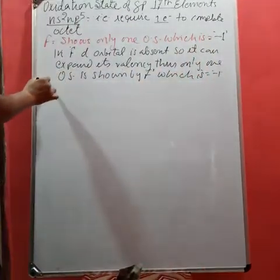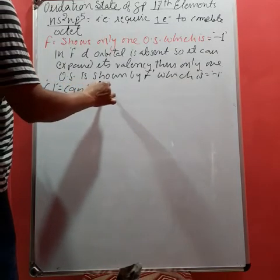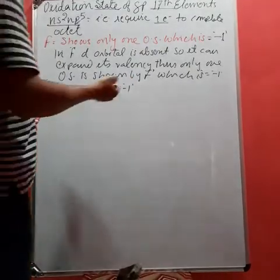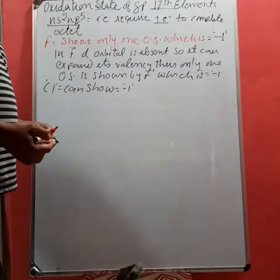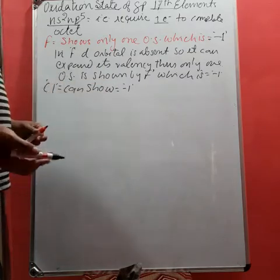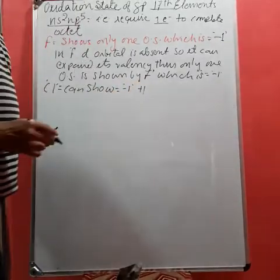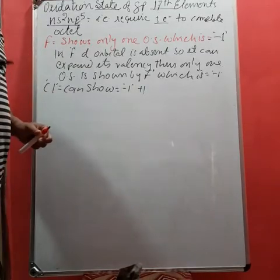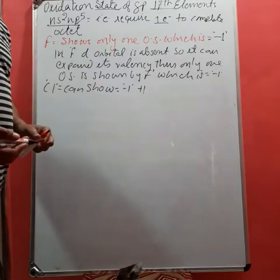Chlorine can show -1 state if it reacts with hydrogen or alkali metals or alkaline earth metals, like HCl, NaCl, KCl, etc. It can show +1 oxidation state also if it forms compounds with oxygen, like OCl₂, where Cl shows +1 oxidation state. One more compound is ClF, with fluorine. Since fluorine is most electronegative, it shows -1 while Cl shows +1.